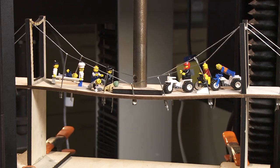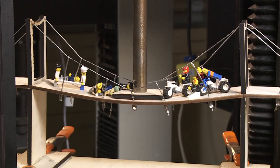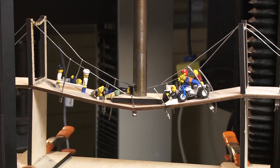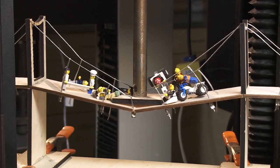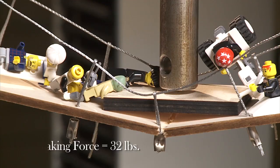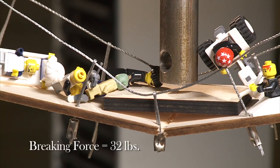As force is applied, the cables transfer the load out to the towers and anchor points at the end. This force distribution maintains the integrity of the deck so that even when it does break, it doesn't really launch anyone. Unfortunately, I really wanted to see the Crazy Guy get launched. This bridge supported 32 pounds, which is the same as the truss bridge.